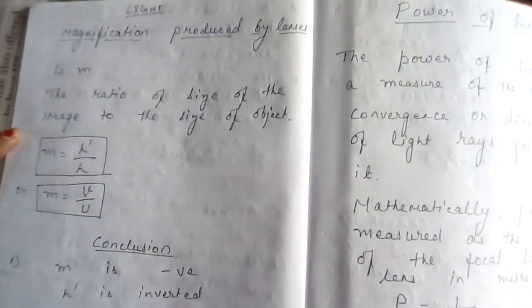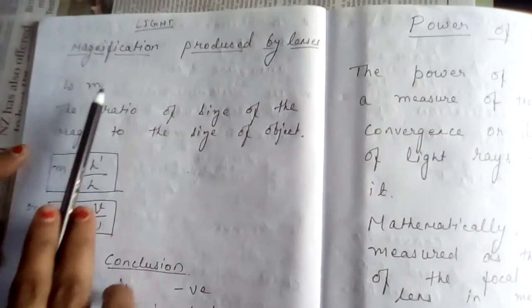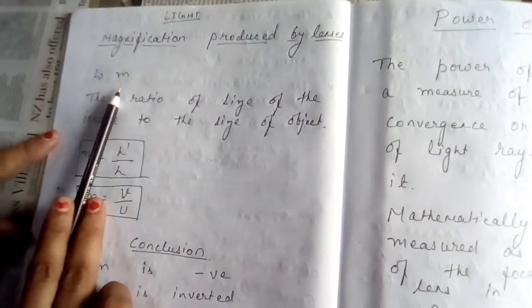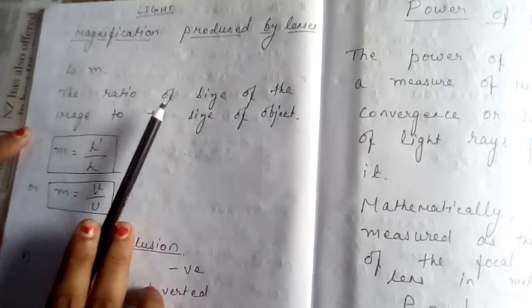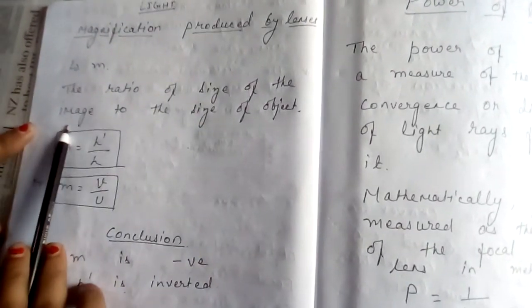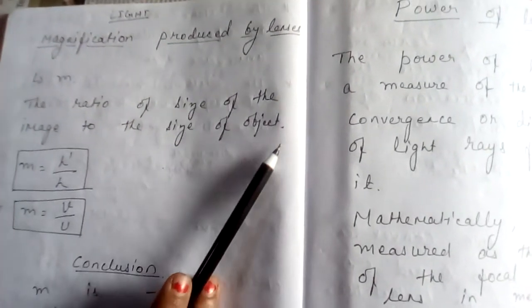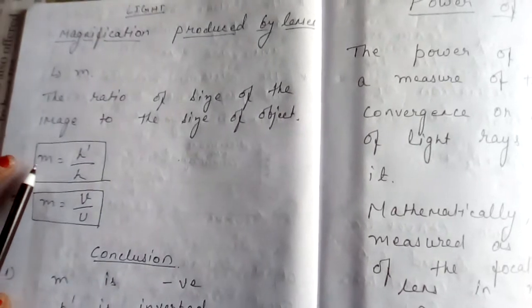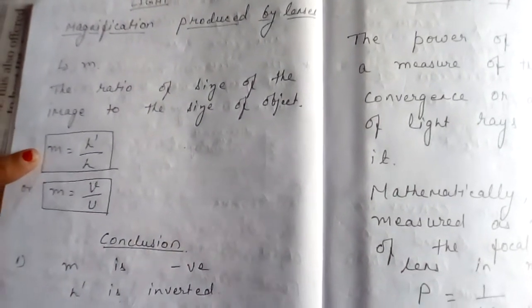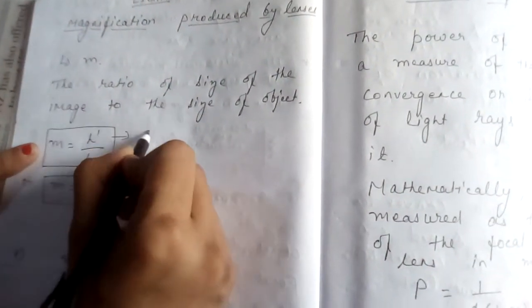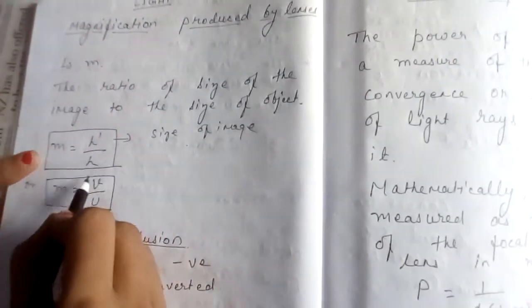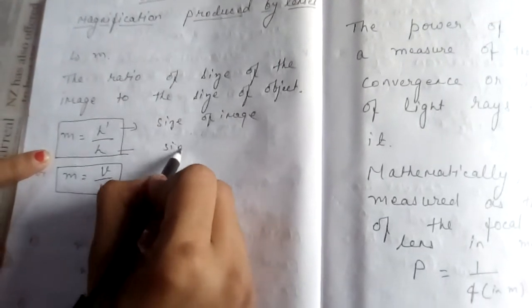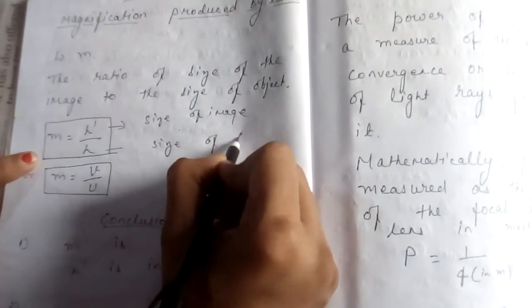Magnification produced by lenses. Magnification is denoted by M. It is defined as the ratio of size of the image to the size of object. So, M is equal to H dash, H dash is size of image, to the size of object H.